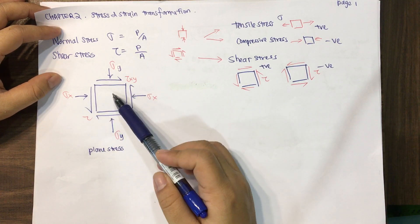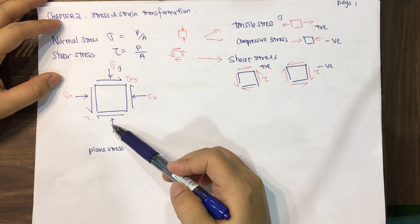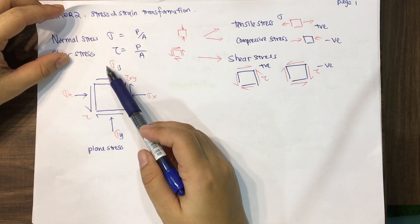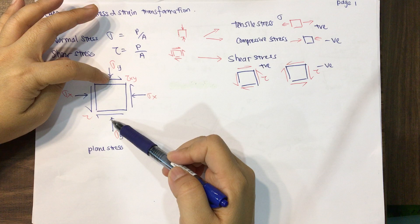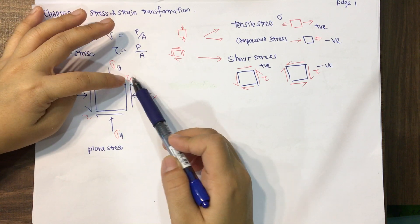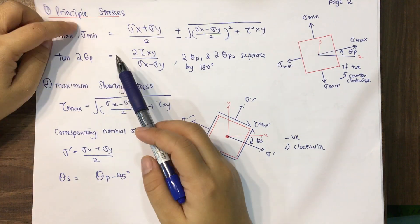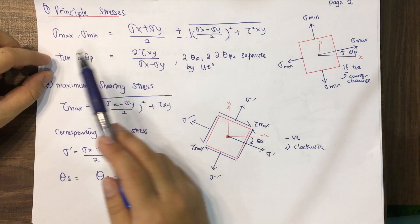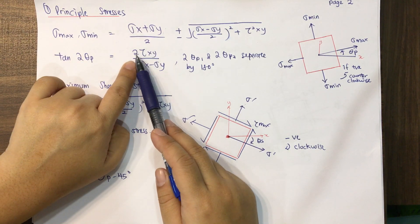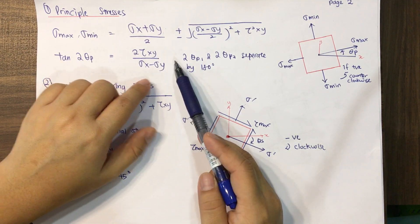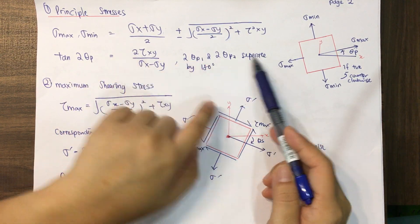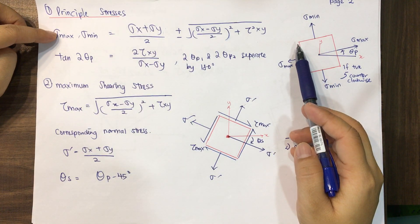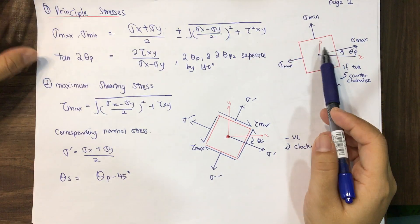This is the plane stress, where we can see the component sigma y, sigma x, and tau xy. You need to know the positive and negative values — going inward is negative, going to the right is positive. From these, we can calculate the principal stresses — sigma maximum and minimum — using the principal stress equation. Also, tan 2θ_p equals 2τ_xy over (σ_x minus σ_y), and 2θ_p1 and 2θ_p2 are separated by 180 degrees.